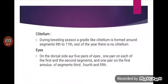Clitellum: during the breeding season, a girdle-like clitellum is formed around segments 9th to 11th. For the rest of the year there is no clitellum.